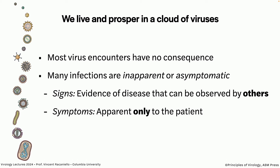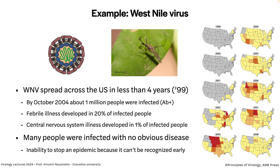Our ability to measure signs has gotten better over the years with incredible technology. Let's give an example of a virus that causes a lot of inapparent infections — West Nile virus. It was absent in the Western Hemisphere until 1999, when it first appeared in Queens, New York City. Birds started dying in the Bronx Zoo because West Nile virus naturally infects birds. It's transmitted by mosquitoes among birds, and now and then a mosquito will bite a human. It spread across the whole U.S. in less than four years.